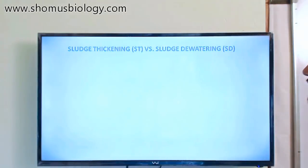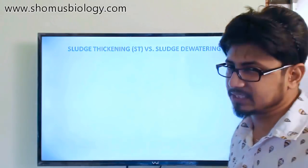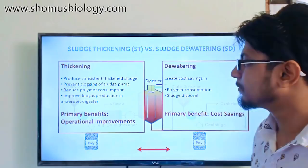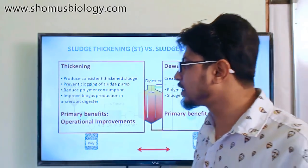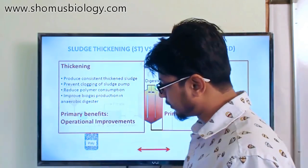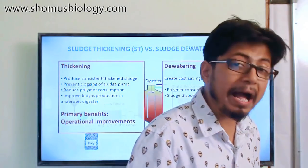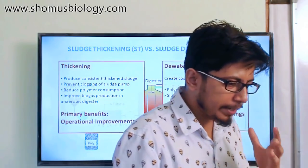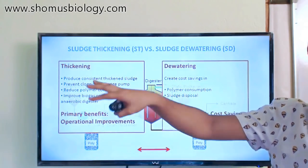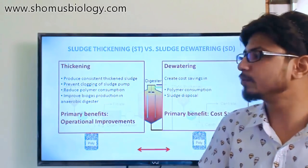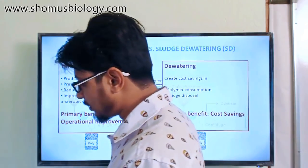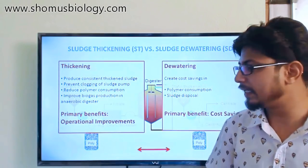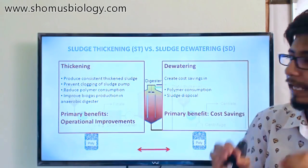The key difference between sludge thickening and sludge dewatering: thickening produces a consistent thickened sludge that prevents clogging of sludge pumps and improves biogas production in the anaerobic digester. Importantly, the anaerobic digester produces methane — a biogas that can power the thickening machines themselves, reducing the cost of solids handling. The biogas is stored in a gas chamber and used to run the thickening equipment. The primary benefit of thickening is operational improvement.